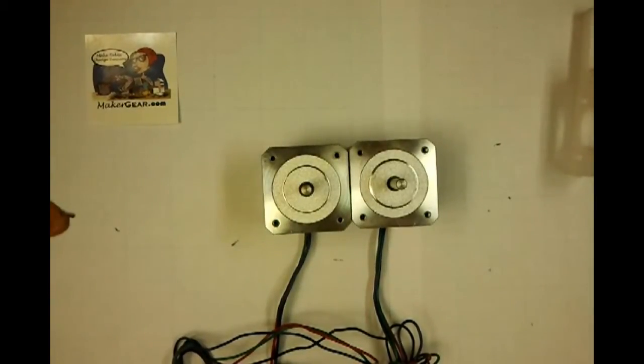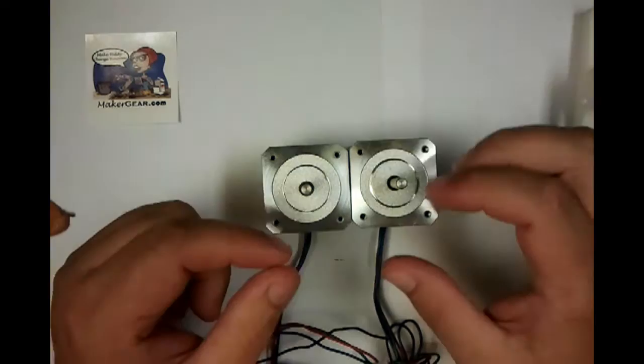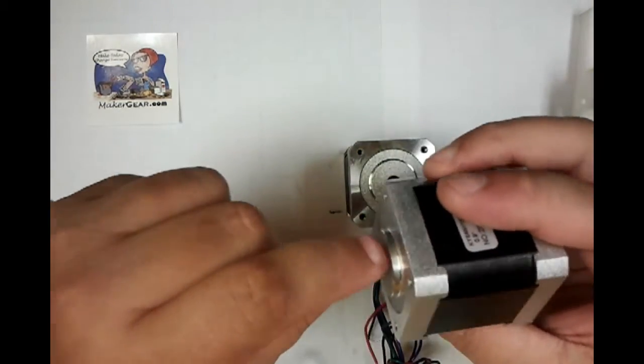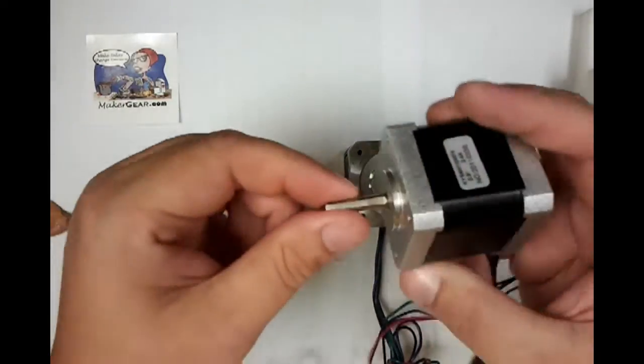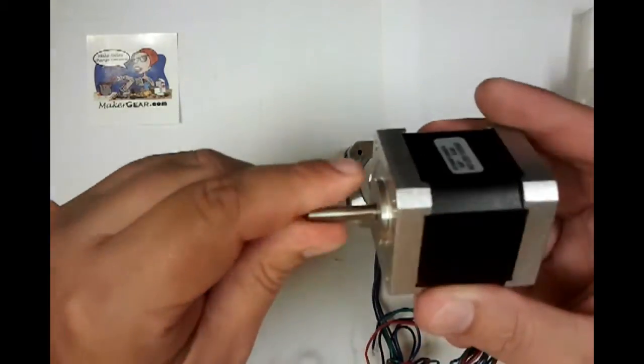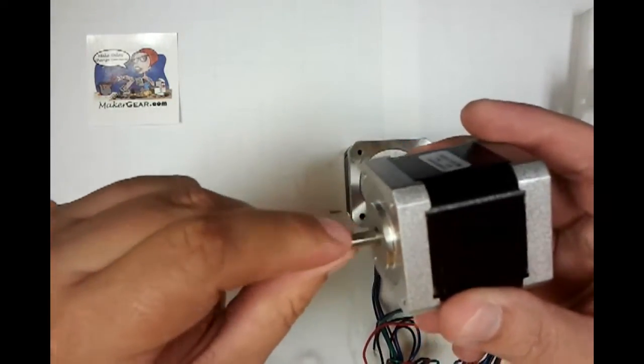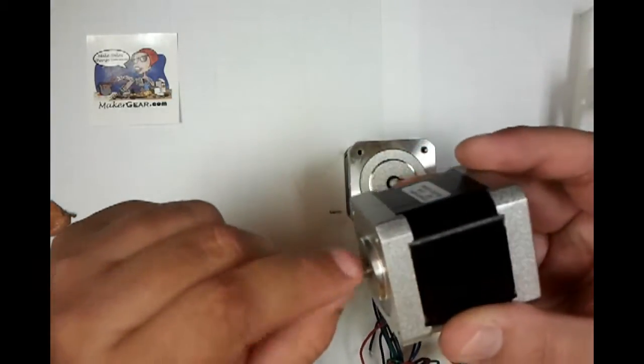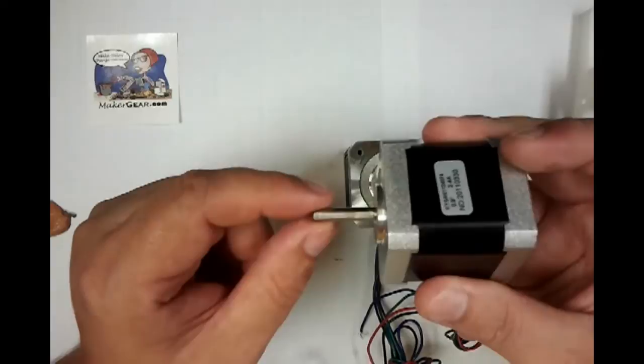Hey guys, Neil here again at FabLocker doing another tutorial for the RepRap. This is going to be how to put flats on your motor. A flat is a little flat spot on the drive shaft of your stepper motor. As you can see right here, I just went ahead and put the flat on this one. Some motors you get will already have a flat spot, some motors have two flat spots, some motors have no flat spots.